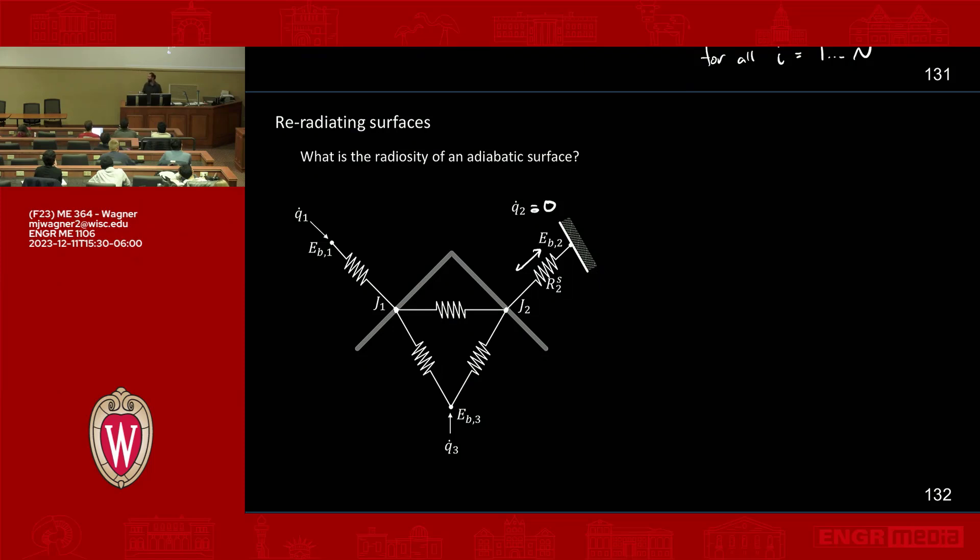Well, that's weird. Think about it. That's weird. So you're saying, I changed the heat flow, and all of a sudden, my radiosity node, J2, behaves like it's a black surface.